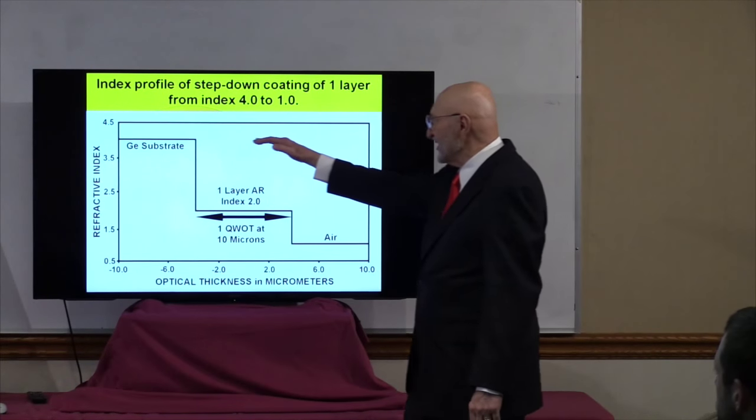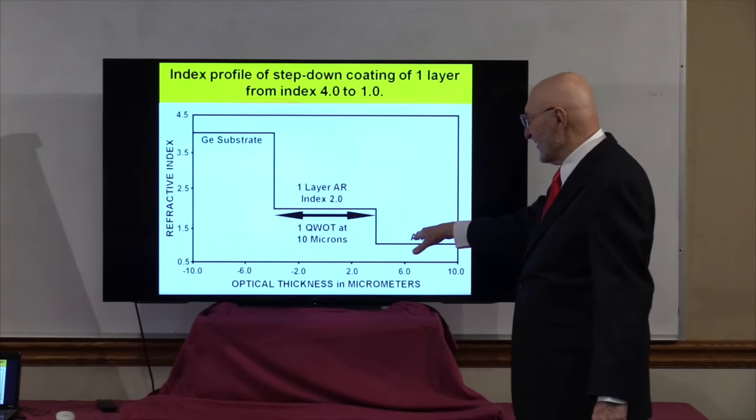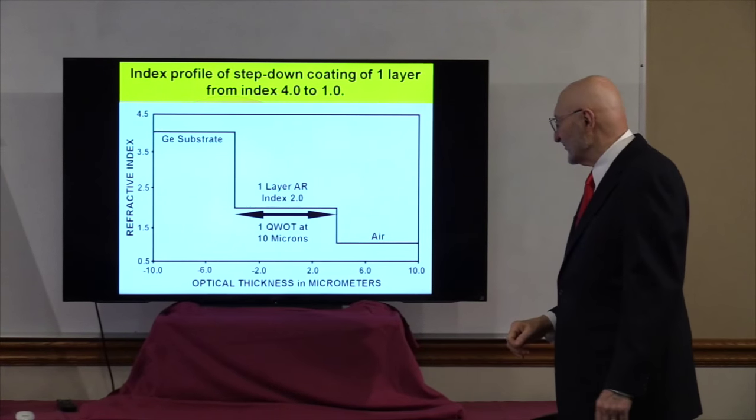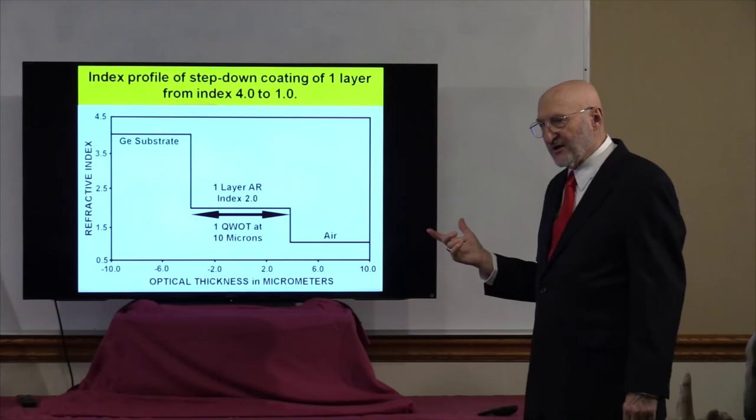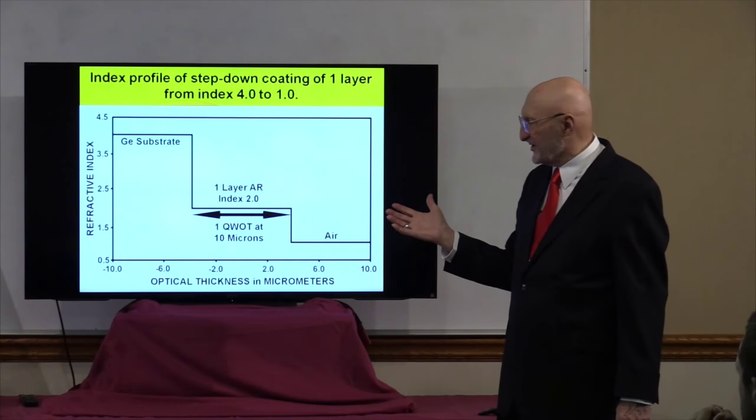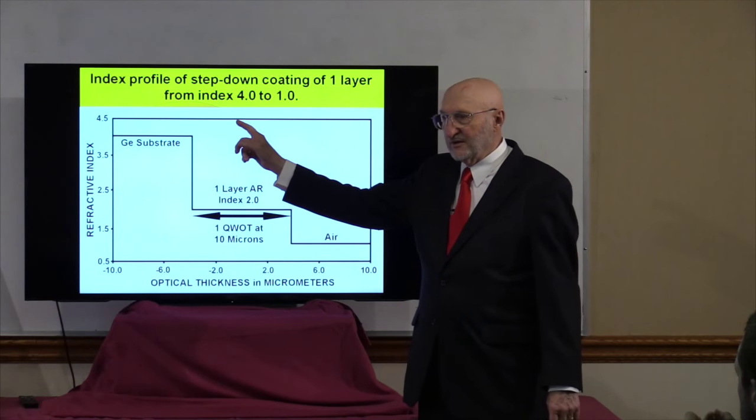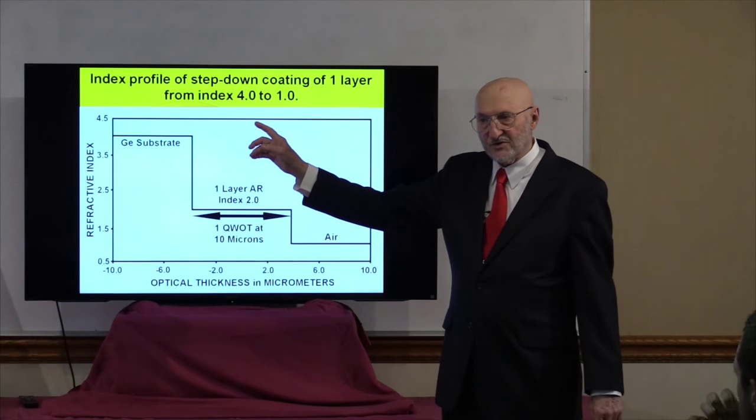For example, if I have a germanium substrate at index 4 and air at index 1, that little formula I showed you—the square root—says the best quarter-wave layer I could put down would be the square root of 1 times 4, which is 4, the square root of which is 2.